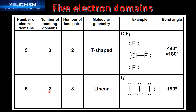In the last example with five electron domains, we have two bonding domains and three lone pairs of electrons. The molecular geometry is linear. An example is I3 negative, and you can see the Lewis structure here. The bond angle is 180 degrees.